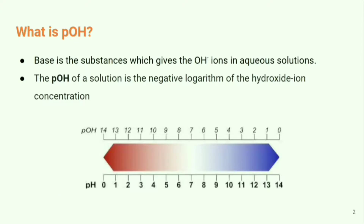The pOH of a solution is the negative logarithm of the hydroxide ion concentration. So whatever the OH⁻ ion concentration is, just take the negative logarithm — that's pOH. On the pOH scale, as we go from 0 to 7 the acid character increases, and from 7 to 14 the basic character increases.